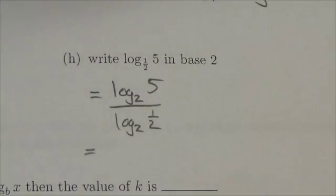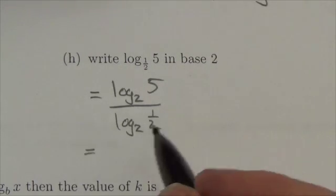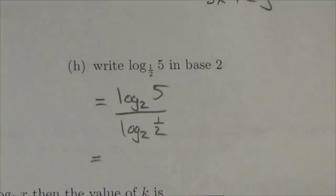A half is 2 to the negative 1. That's how the 2 gets into the denominator here. So the log base 2 of 2 to the negative 1 is going to be negative 1.